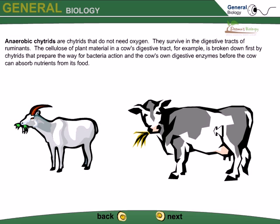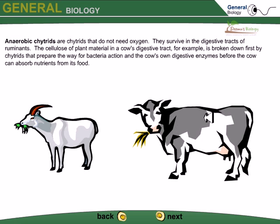The chytrids present in the rumen of a cow start to digest food first, and right after that the bacteria present inside the gut start to break it down further, before the cow even secretes its own enzymes for digesting them. This shows how important chytrids are for eukaryotic organisms like cows and sheep for their digestive purposes, as they begin breaking down plant materials filled with carbohydrates.